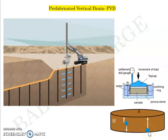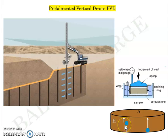The same magnitude of settlement will take almost double the time when only single drainage is allowed, compared to double drainage. With double drainage, you attain the same magnitude of settlement in a reduced time. That is the principle behind a prefabricated vertical drain or a sand drain — you allow settlement to happen at a higher pace and accelerate the process to attain the same magnitude.